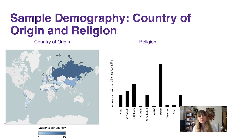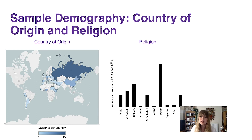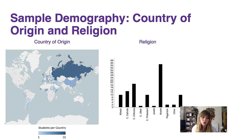In terms of religion, we have a varied religious profile of the students within the sample. However, the majority of students are Muslim, and this is followed by the different Christian denominations — Catholic, Orthodox, Protestant, and other Christian denominations which they did not specify.